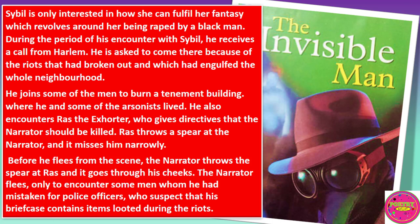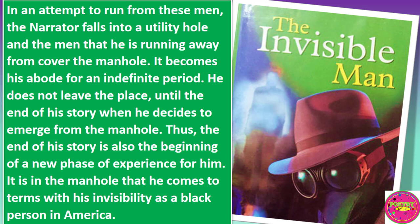The narrator flees, only to encounter some men whom he had mistaken for police officers, who suspect that his briefcase contains items looted during the riot. In an attempt to run from these men, the narrator falls into a utility hole, and the men that he is running away from cover the hole. It becomes his abode for an indefinite period. He does not leave the place until the end of his story, when he decides to emerge from the manhole. Thus the end of the story is also the beginning of a new phase of experience for him. It is in the manhole that he comes to terms with his invisibility as a black person in American society.